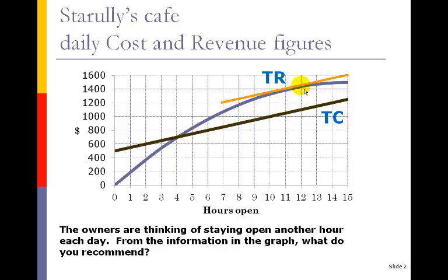If we go over to around the 11th or 11-and-a-half hour, we're seeing a situation where the slopes of the orange revenue line and the cost line are basically going up the same amount. So in that hour, we're bringing in as much money as we're paying out. That's a key moment for analysis we'll revisit later in the course.